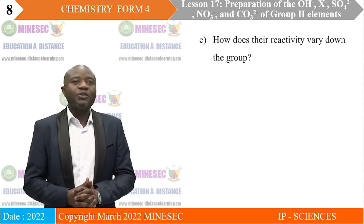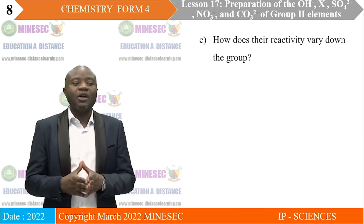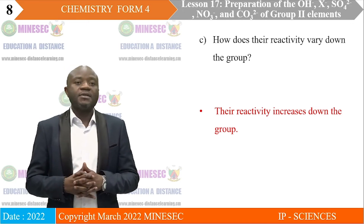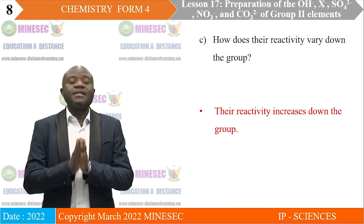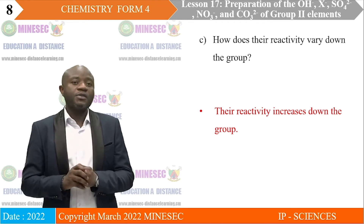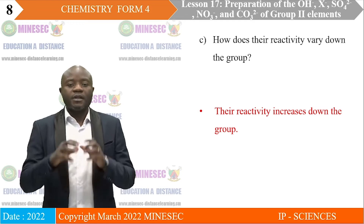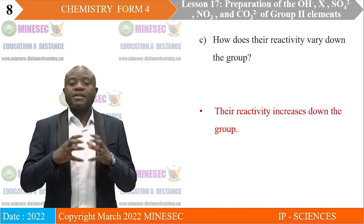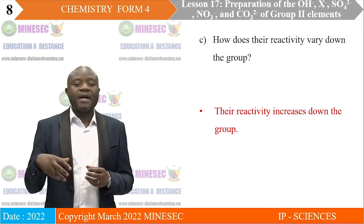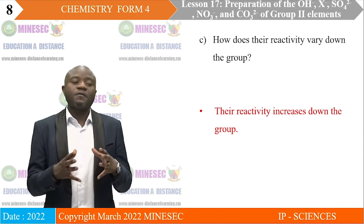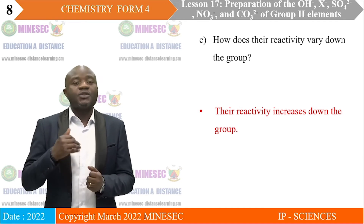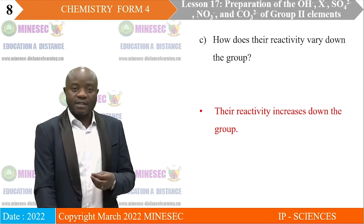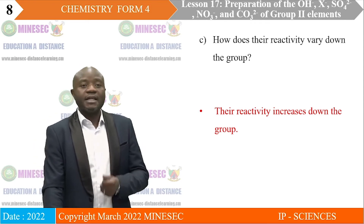C. How does their reactivity vary down the group? The Group 2 elements are reactive metals, and their reactivity increases down the group. This is because as you move down the group, the number of electronic shells increases, so there is greater shielding of the valence electrons by the inner electrons. The attraction of the nucleus on the outer electrons is reduced, so the outer electrons are more easily lost, and their reactivity increases down the group.